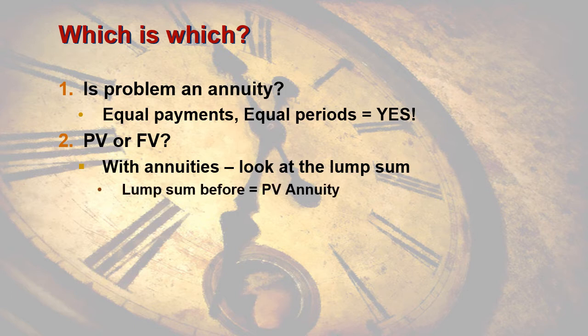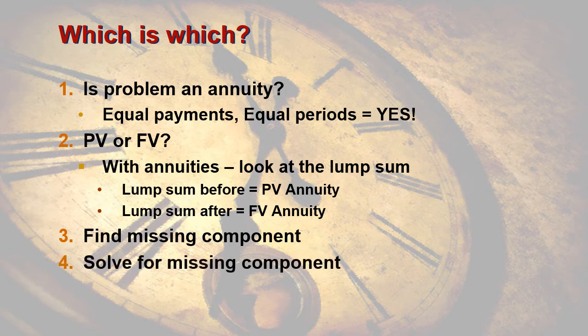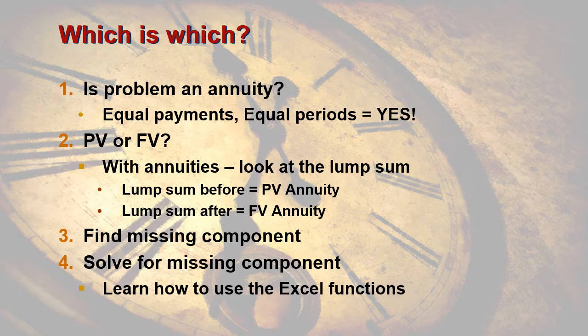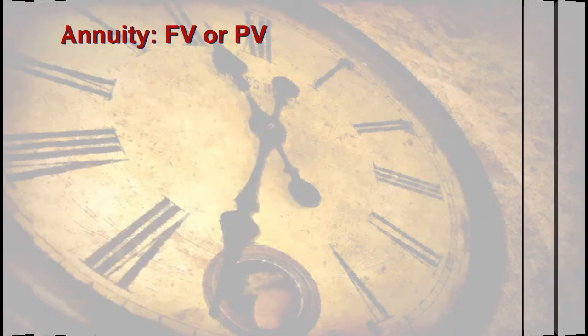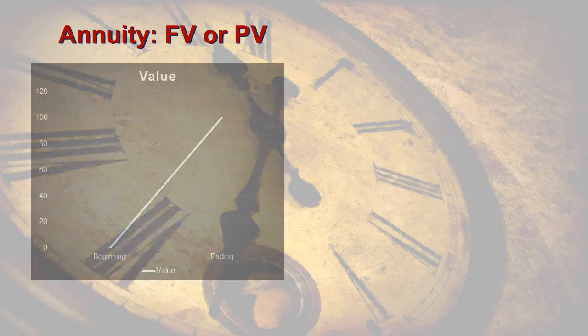Look at the lump sum. If the lump sum is up front — if you're starting at something and ending at nothing — you've got a present value annuity problem. If you're starting with nothing and ending with something, then you're dealing with a future value annuity problem. After you've figured out what type of problem it is, you need to figure out what's the missing component. Then you've got to solve for it. As long as you know Excel, that won't be very challenging.